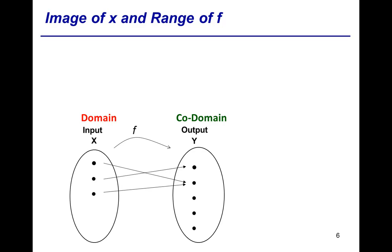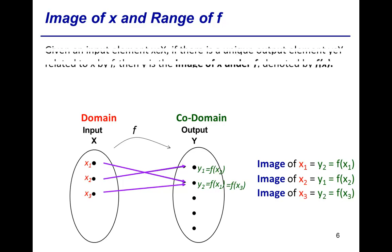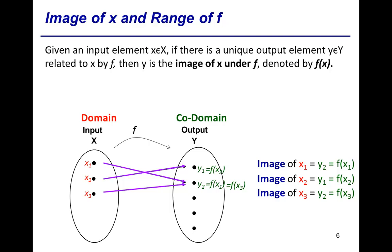If we are given a particular element, say x1 in the domain, and by following the arrow, we should be able to find a particular element y2 in the codomain such that y2 equals f of x1. We say that the image of x1 is equal to y2, or f of x1. In general, given any element x in domain X, if there is a unique output element y in codomain Y related to x by f, then y is the image of x under f, denoted by f of x.